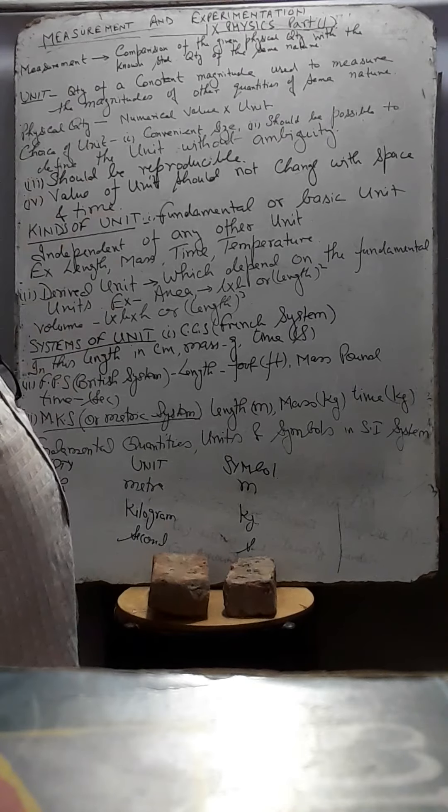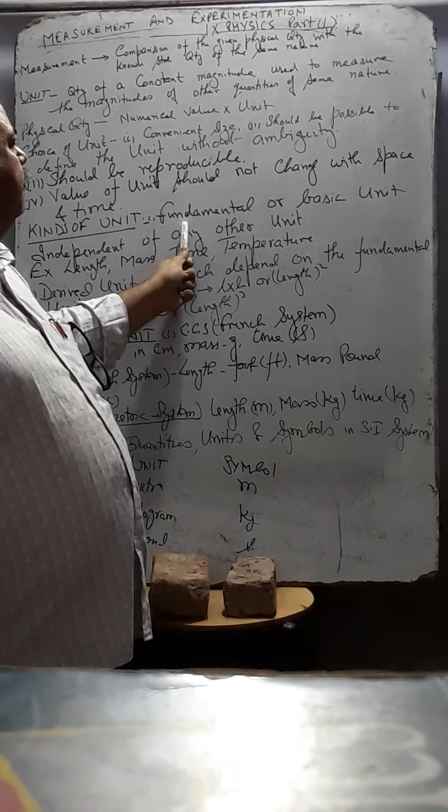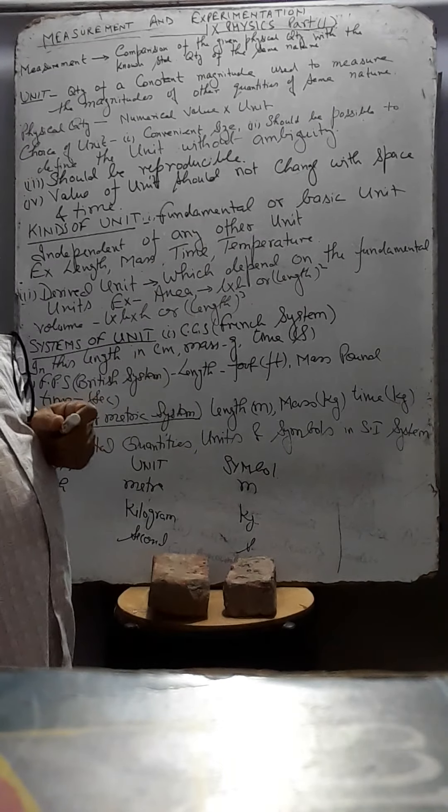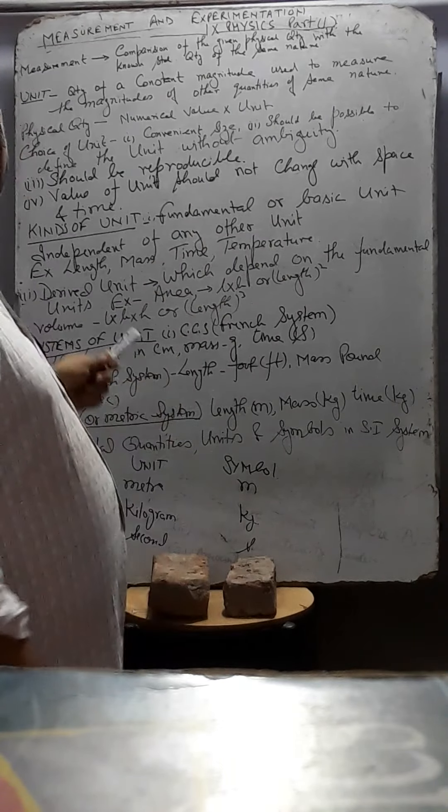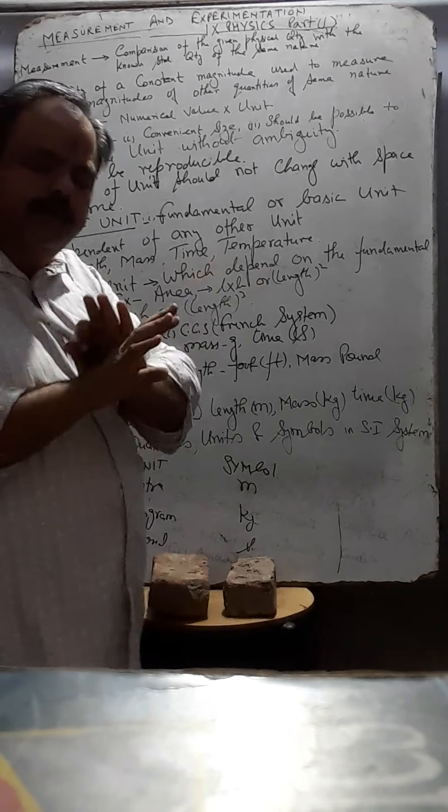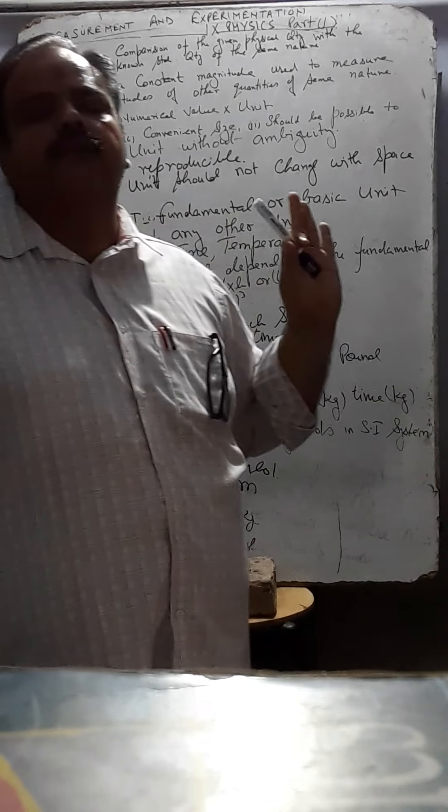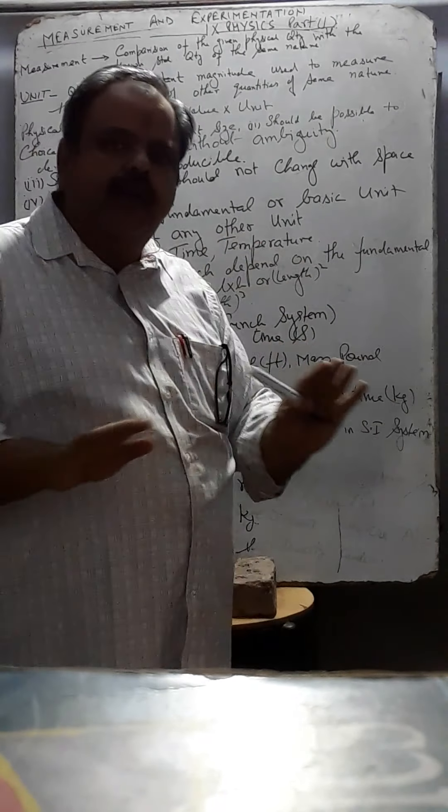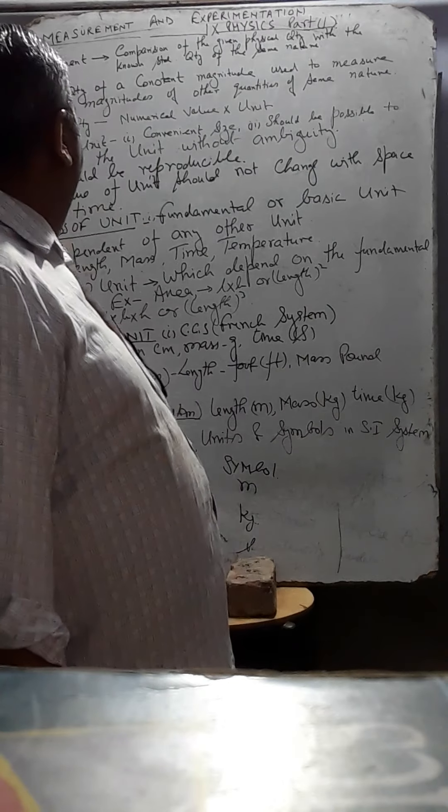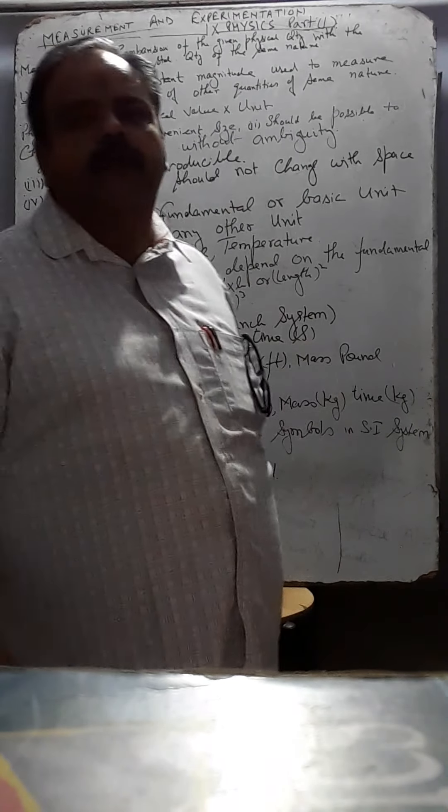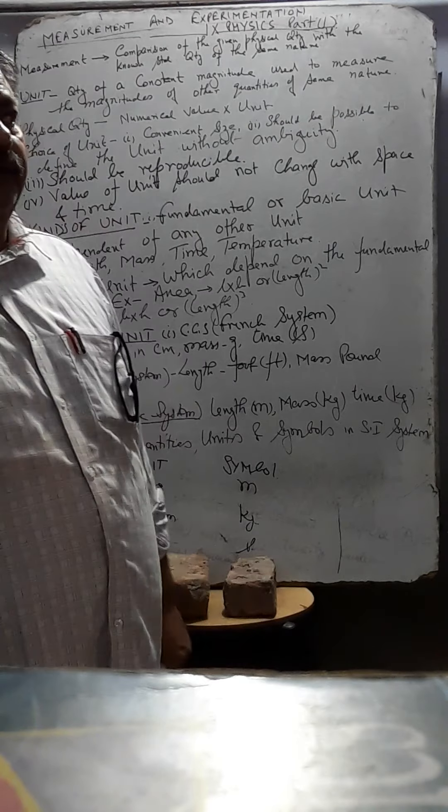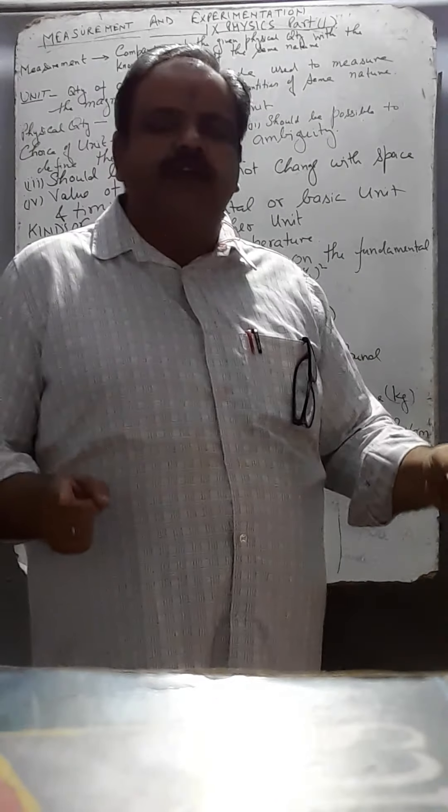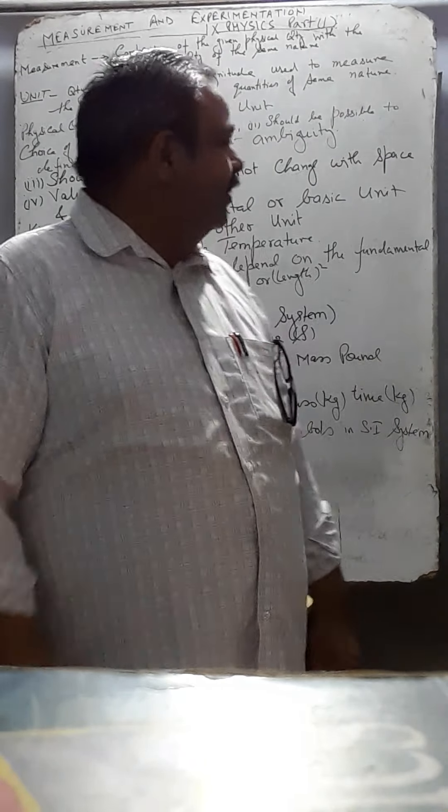Kinds of unit. Kinds of unit. Number one is fundamental or basic unit. Fundamental or basic unit. Independent of any other unit does not depend on any other units. Fundamental or basic unit does not depend on any other unit. For example, length. Length is the distance in between the two fixed points. Measured in meter.